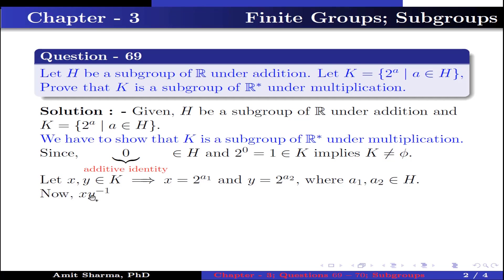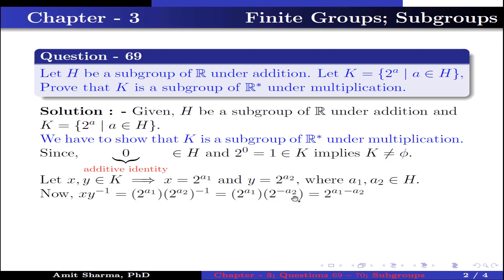Now xy⁻¹ = 2^a1 · (2^a2)⁻¹ = 2^a1 · 2^(−a2) = 2^(a1 − a2), which belongs to k.